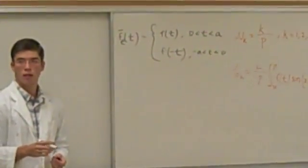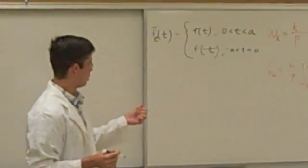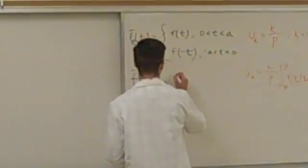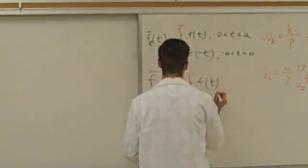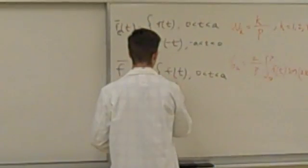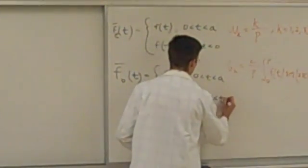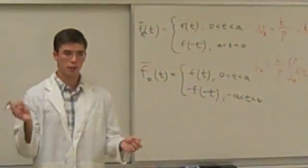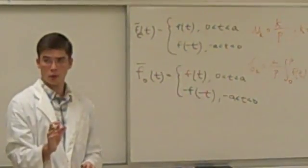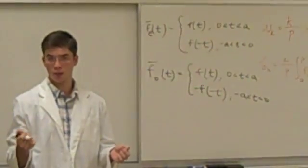Likewise, we have an odd representation of a function. The odd representation is written very similarly — f bar of t is equal to f of t on our interval from 0 to a, but this time it equals negative f of negative t on the negative interval. The easiest case in point is the sine function. When you look at the sine function with respect to symmetry of the y-axis, you see that it dips down below the x-axis, so sine of negative x is equal to negative sine of x.